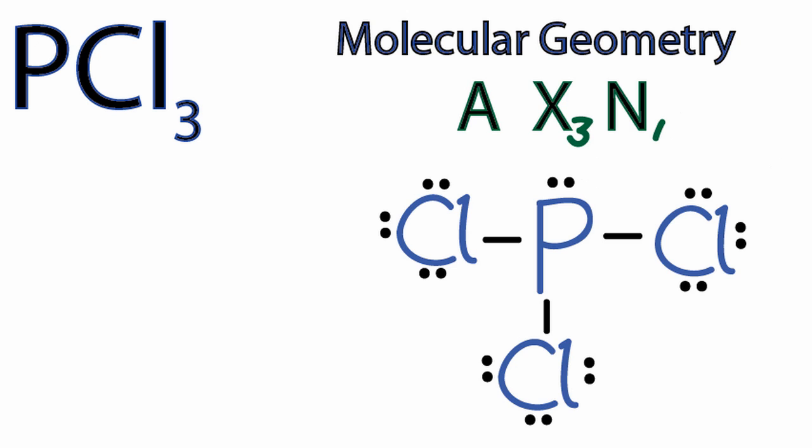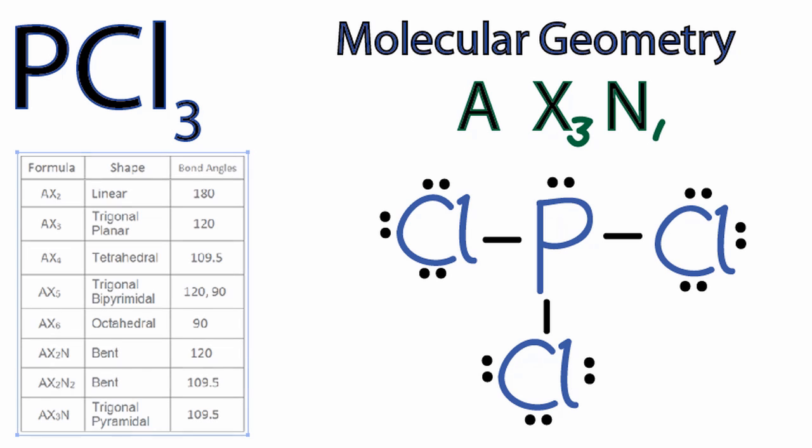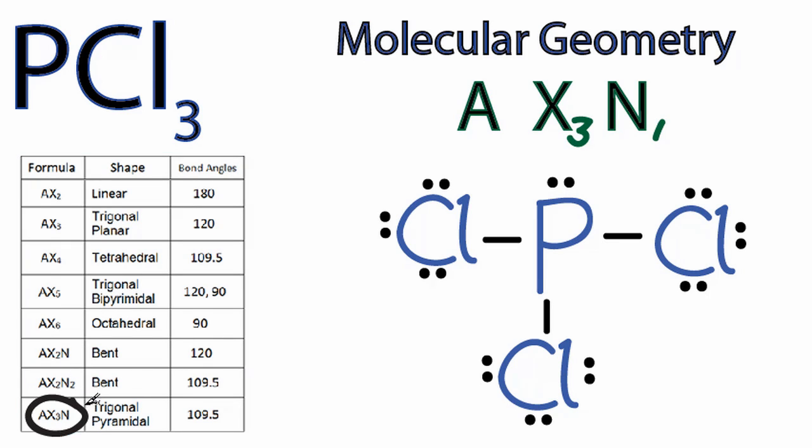So now that we have an AX3N, we can look that up on a table and tell the molecular geometry for PCl3. So as we go down our table here on the left, we see we have AX2, AX3, down to AX2N, AX2N2. At the bottom we have AX3N, and that is trigonal pyramidal.